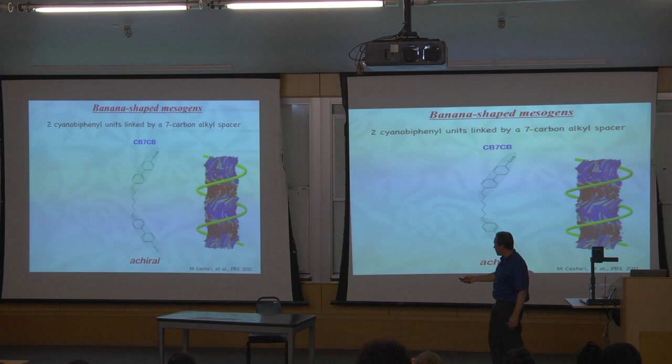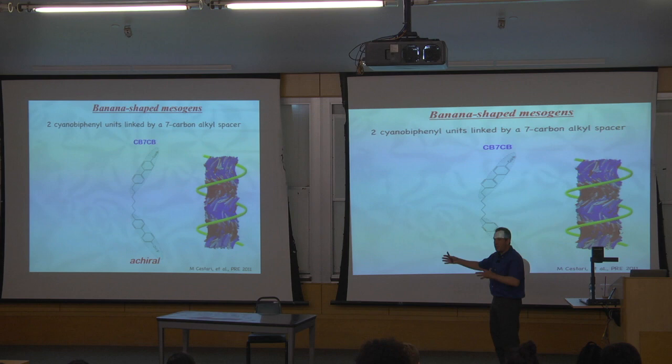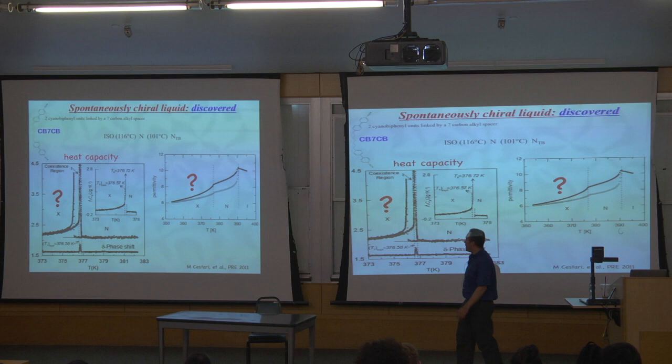Just to give you the punchline: these molecules are going to form a liquid, but that liquid locally looks like a helix. Don't think of it as some kind of crystalline thing — these things are moving everywhere. It's really still a fluid, but it's a spontaneously chiral fluid. Let me run through a few experiments that demonstrate this.